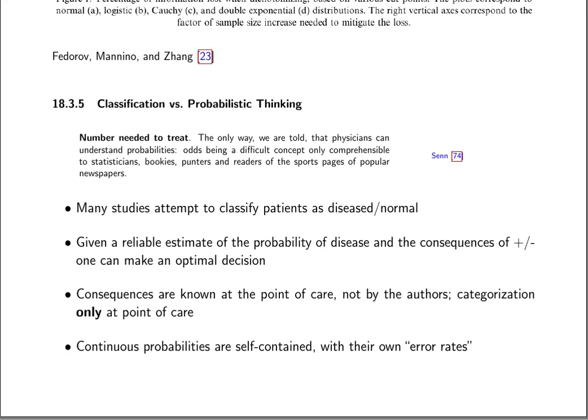This material is from Biostatistics for Biomedical Research, in the Information Loss chapter. We're going to discuss problems with classification, what are the advantages of probabilistic thinking, and this will touch on optimum decision making.